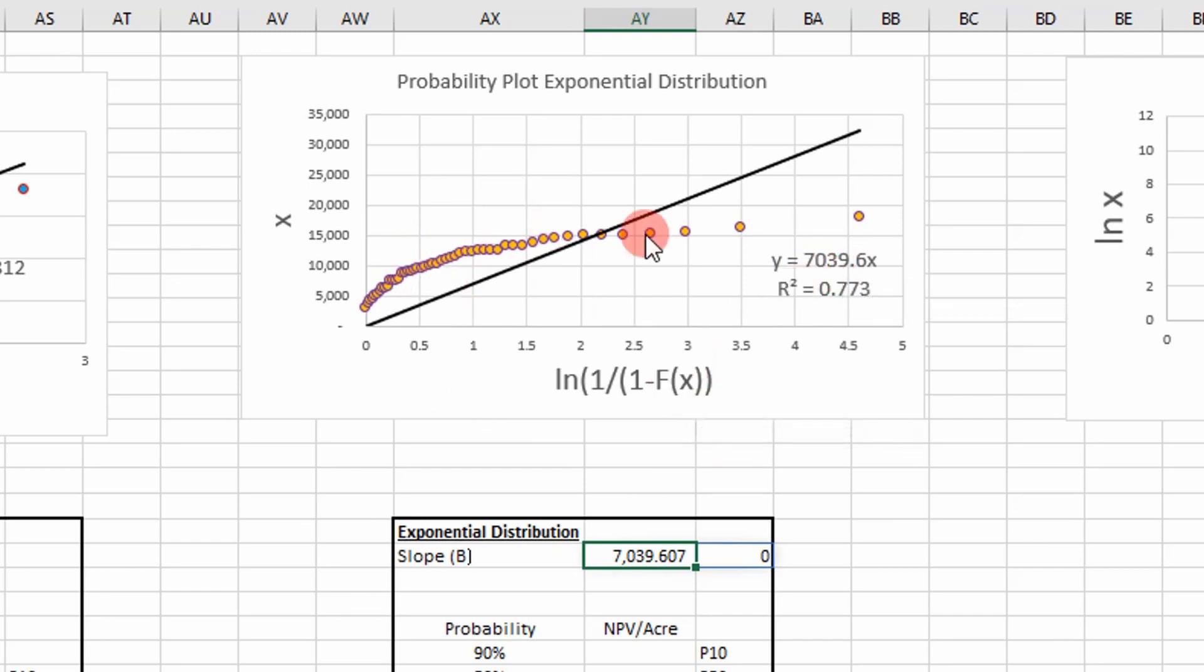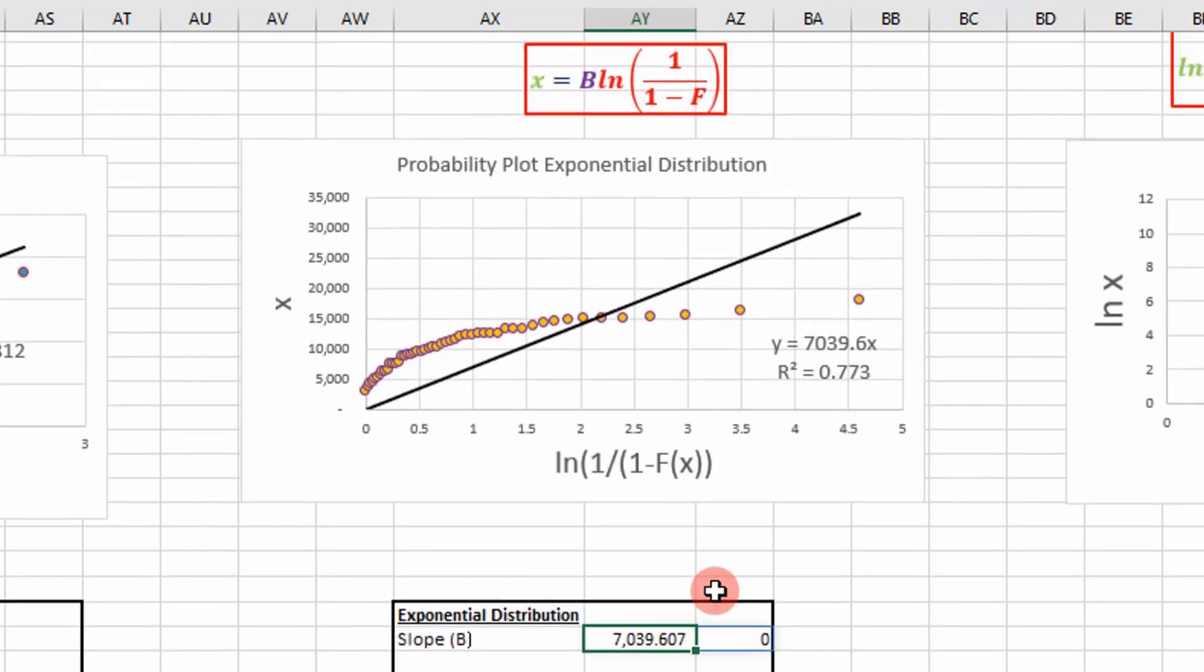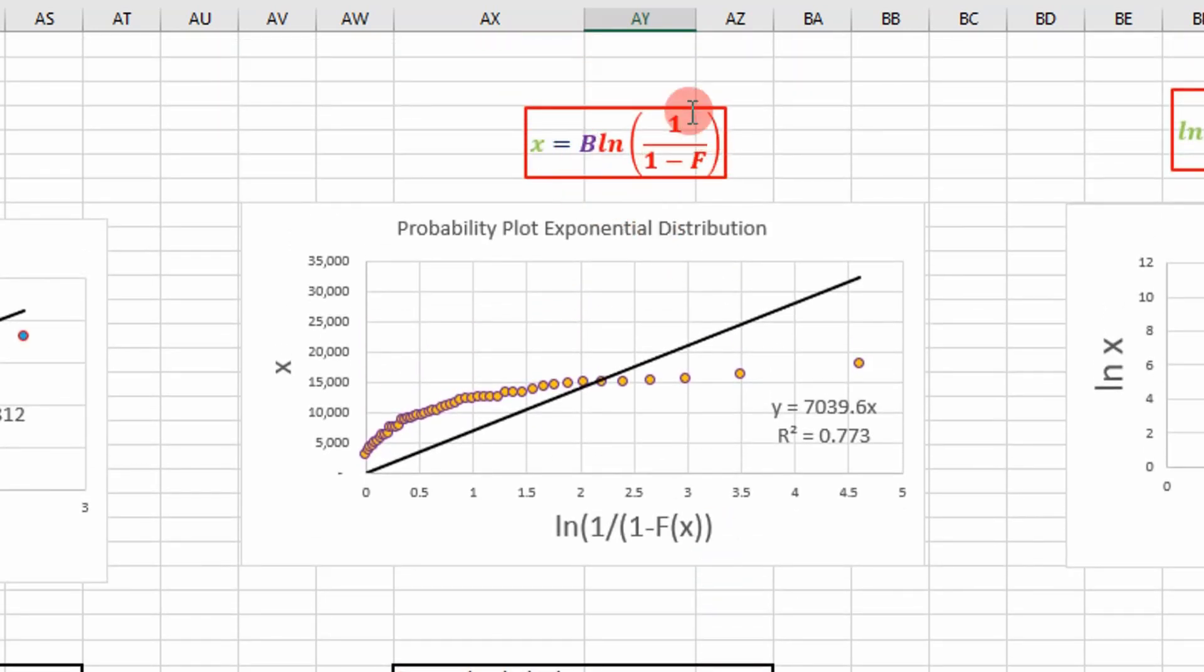We know we did our analysis right, so now we can calculate our P10, P50, and P90 using this equation. I wrote a VBA function for that. It's just a one-liner.